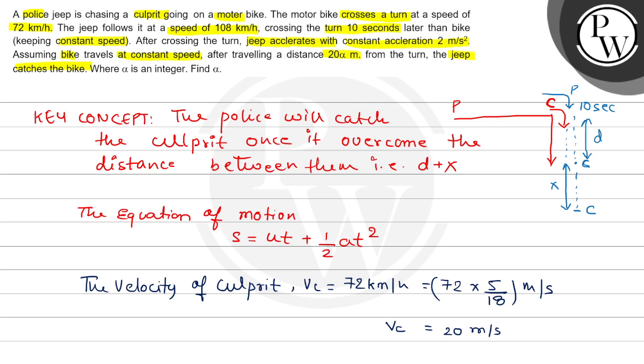With this speed, how much distance will the culprit cover in 10 seconds? Since we know speed equals distance upon time, in 10 seconds it has covered D distance. D distance will be speed into time. Speed was 20 multiplied by 10 seconds. It will be 200 meters. So this 200 meters lead the culprit has.